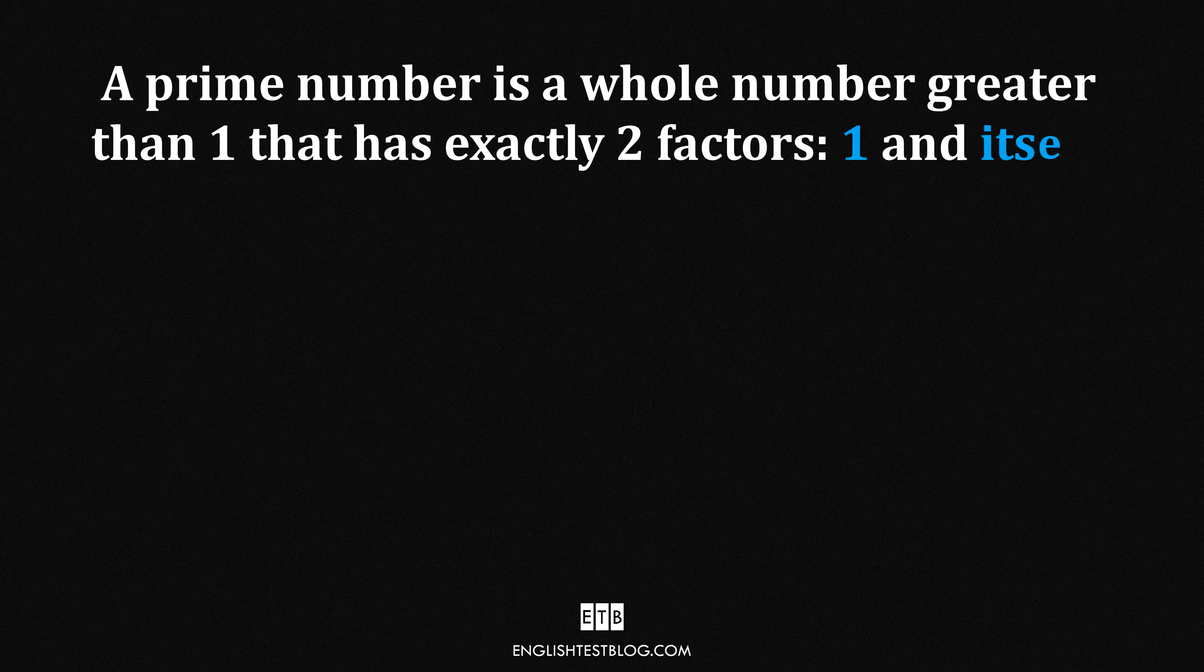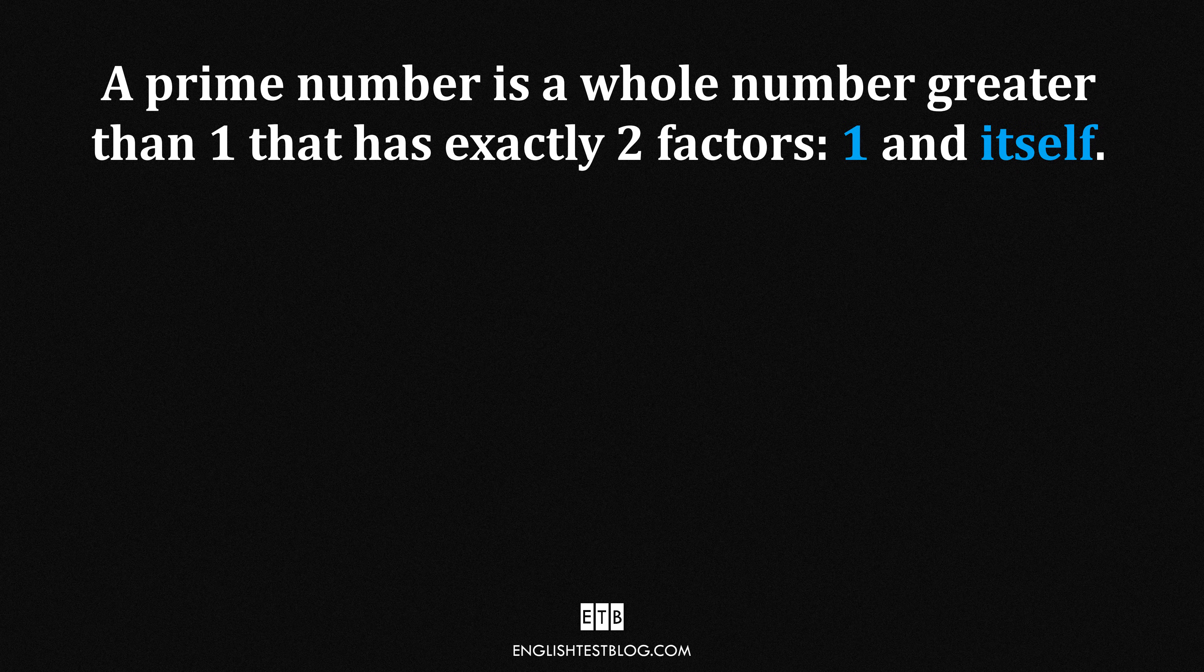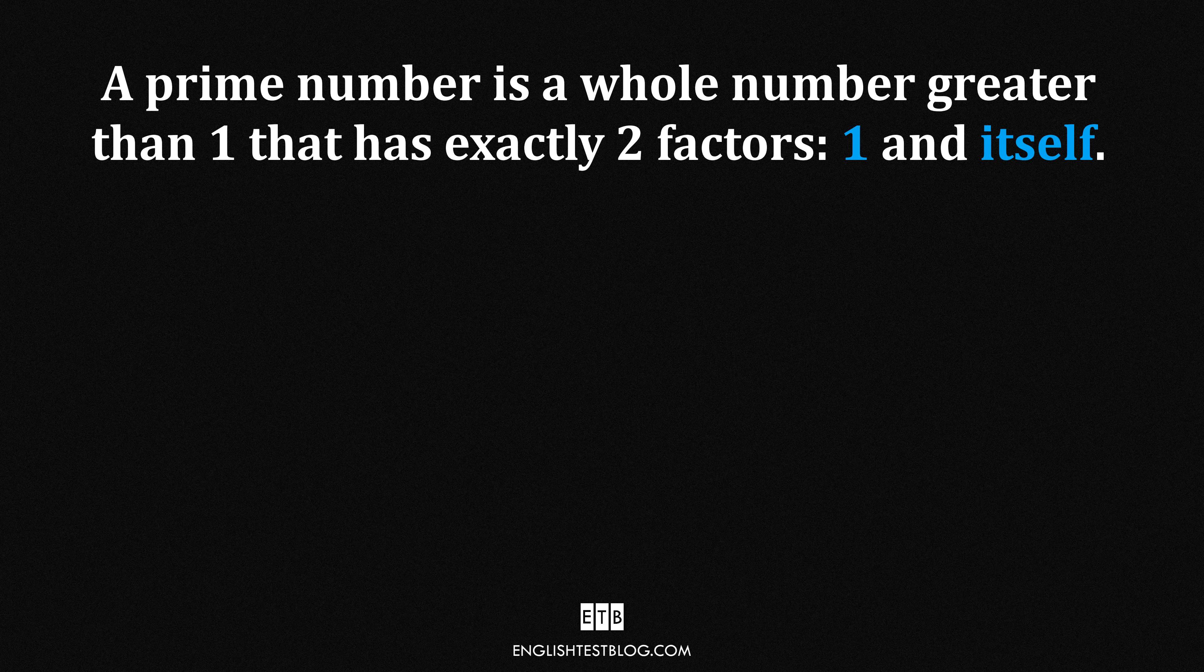So, what's a prime number? A prime number is a whole number greater than one that has exactly two factors, one and itself. That means it can only be divided evenly by one and the number itself, no other numbers allowed.